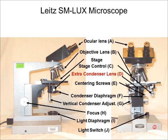Next is the extra condenser lens which is located below the stage and on top of the condenser. It is important to note that this lens comes into play when using objective lenses of 10x and higher, but not for the 4x lens. If you try to use the 10x objective lens without the extra condenser lens then the image will be blurry.